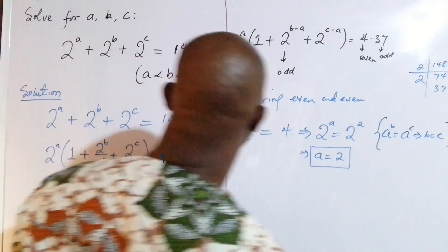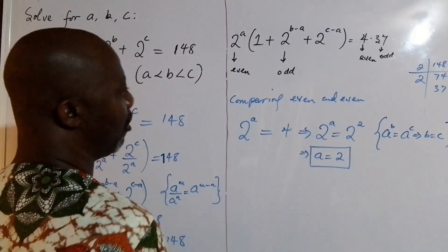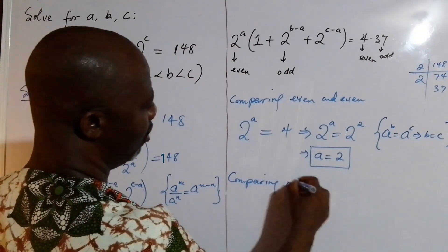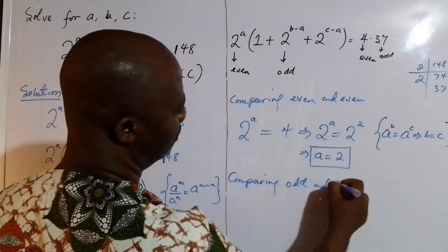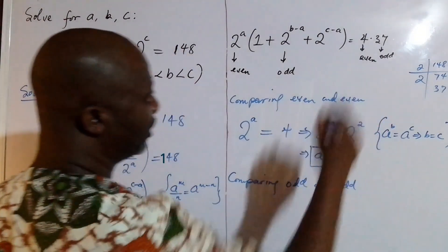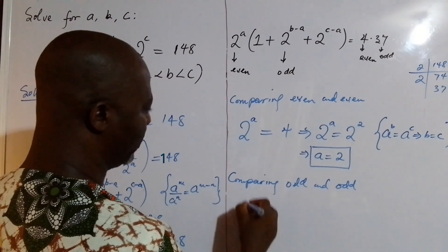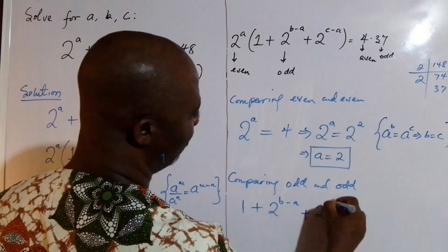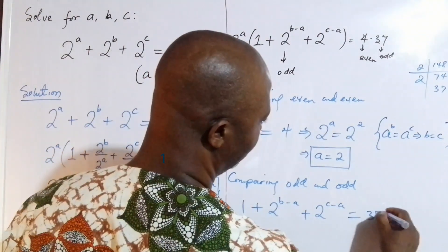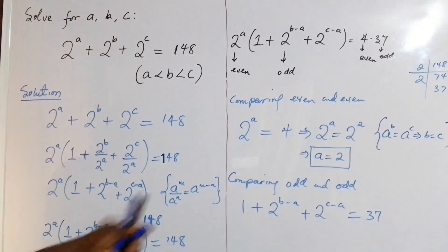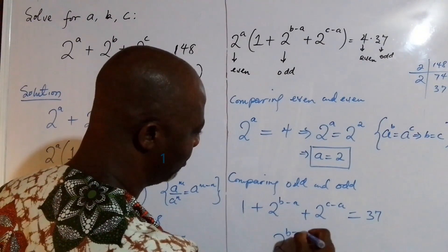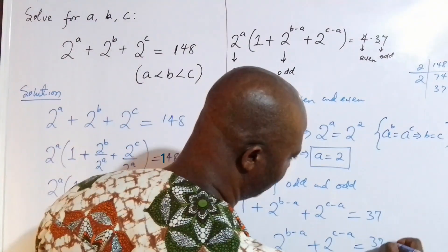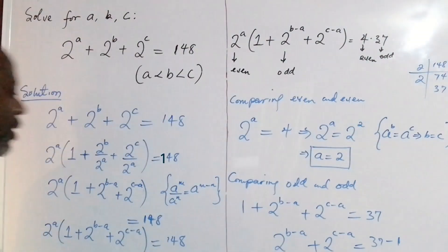Now comparing odd with odd on both sides, we say that 1 plus 2^(B−A) plus 2^(C−A) equals 37. Solving this, 2^(B−A) plus 2^(C−A) equals 37 minus 1, which gives us 36.